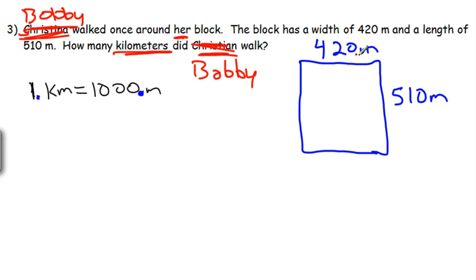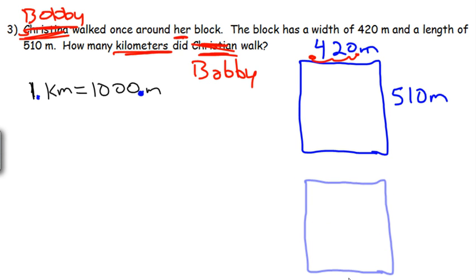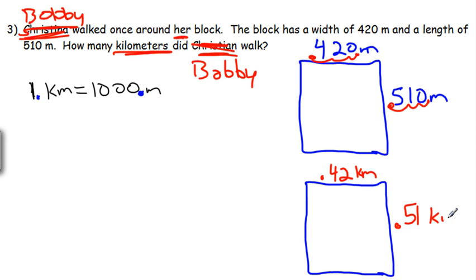If I take 420 and move it three places to the left, I get 0.42 kilometers. Same thing for 510—move it back three places and that's 0.51 kilometers. These are our measurements.